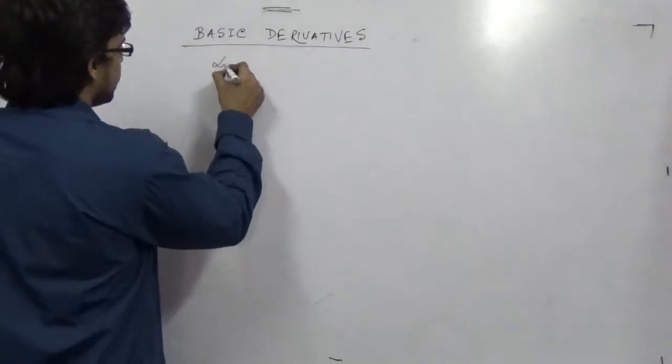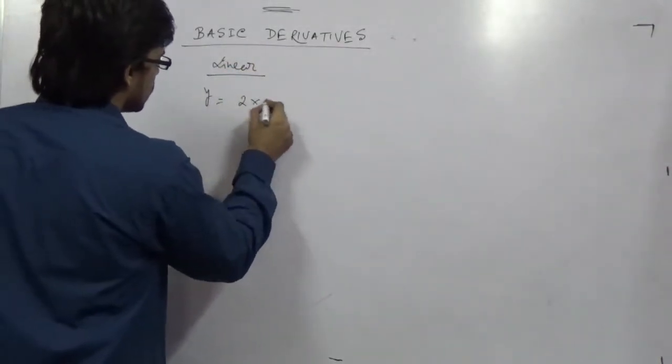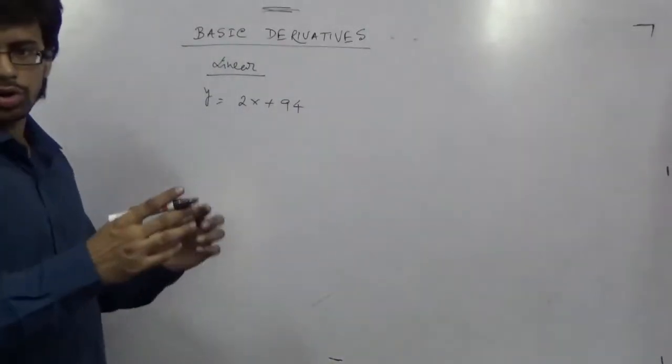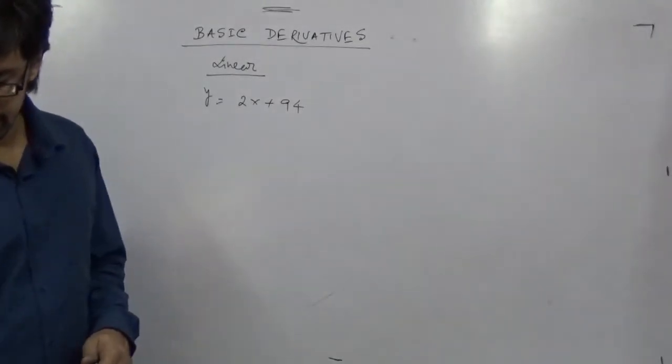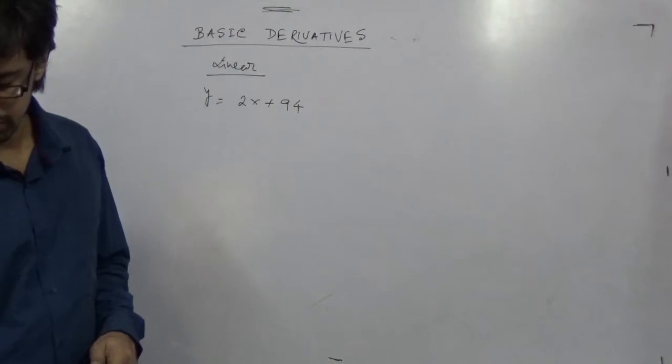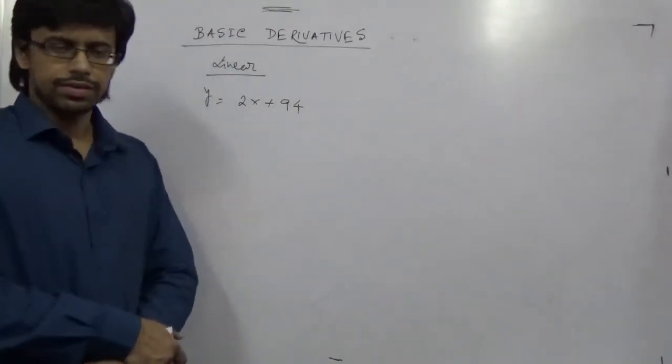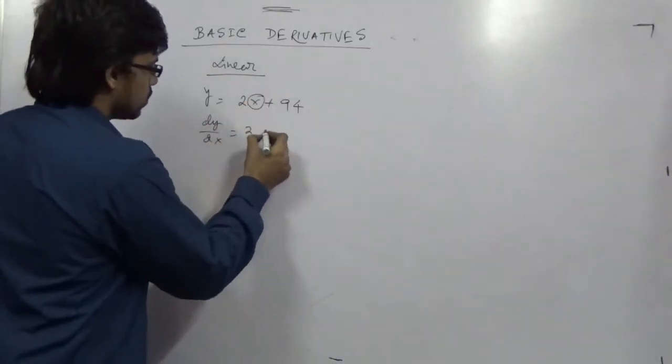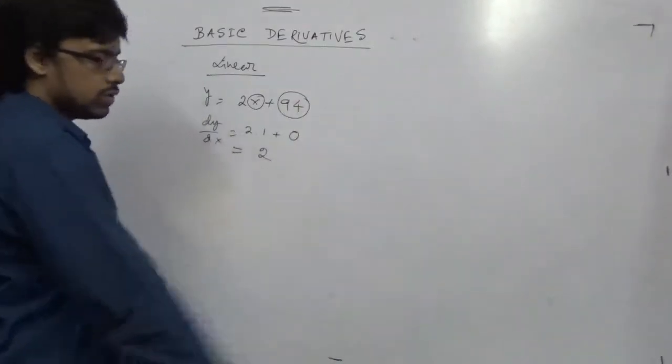So first, linear derivatives. For example, y equal to 2x plus 194. It is a simple linear function. Here I am not going to teach you about the expression, the process or something like that. Here the simple structure is on putting the derivative. So simply this dy/dx, we know this is 2, this x is 1.